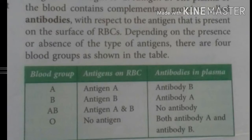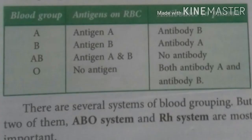This grouping is based on the presence or absence of one or both antigens — antigen A and antigen B — on red blood cells. In normal blood, if an antigen is present in the RBC, its corresponding antibody is absent in the plasma.